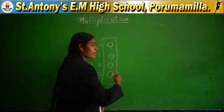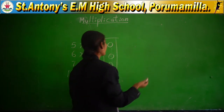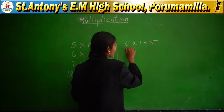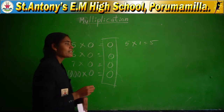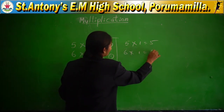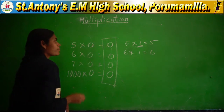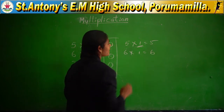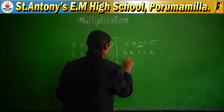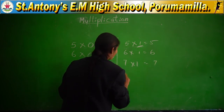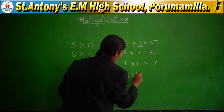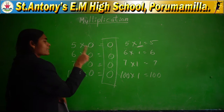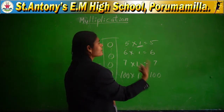Now, multiplication by 1. If you multiply any number by 1 — 5 ones are 5 — you will get the number itself. 6 ones are 6, 7 ones are 7, 100 ones are 100, 1000 ones are 1000. If you multiply with 0 you get 0; if you multiply with 1 you get the same number.